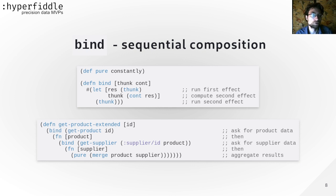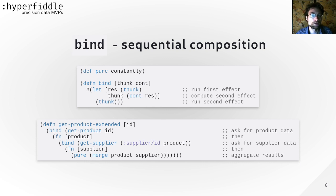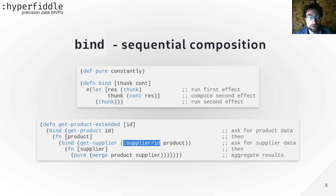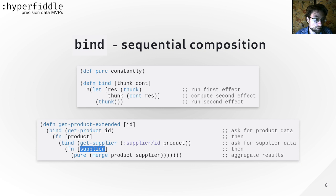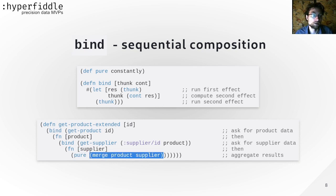Here's an example. We want to call two services one after the other — a product service and a supplier service — to get extended information about a product. We call the product service using bind with a continuation that extracts the supplier ID from the result. We construct the effect to get the supplier information, use bind again, and the continuation returns a pure operation. We can compute and merge all the results together to construct the extended information about the product.